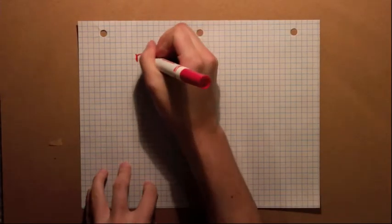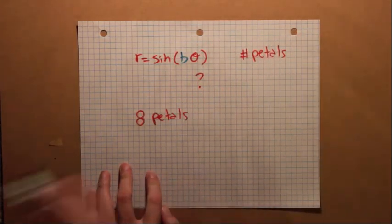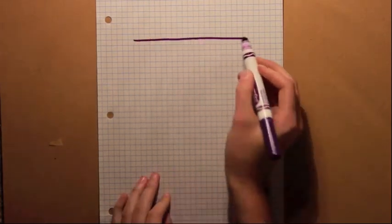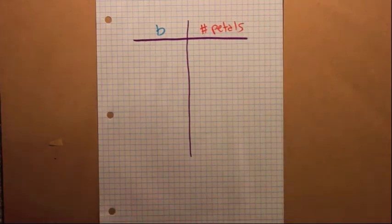So what is the connection between the constant and the number of petals? If I want a flower with eight petals, what constant would I use? I guess if we wanted to figure this out, we could make a table for different values of the constant and the number of petals we get when we graph that equation.